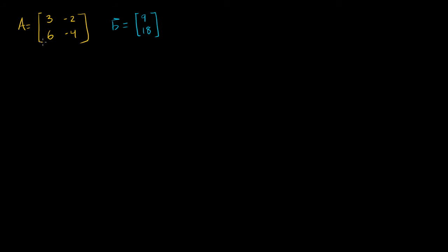I've got this 2 by 2 matrix A here, and I've got this other member of R2, this vector B. Let's figure out all of the interesting things that we can figure out about this matrix and this vector. The first thing of interest — and this is all going to essentially help us visualize what we learned in the last video — is the null space of A.